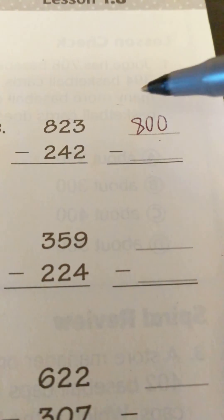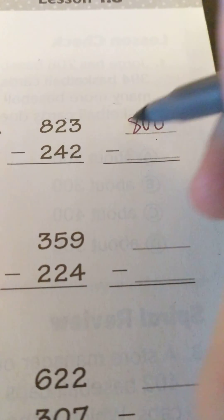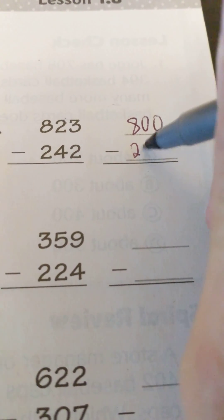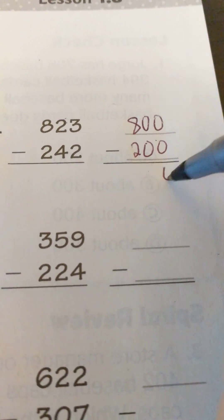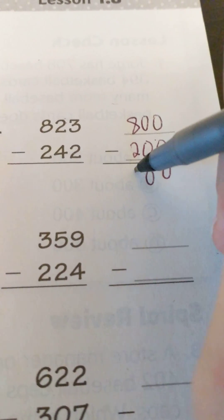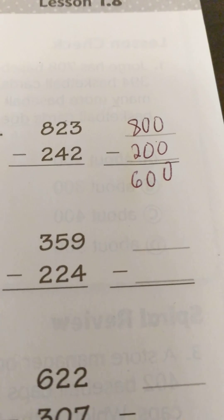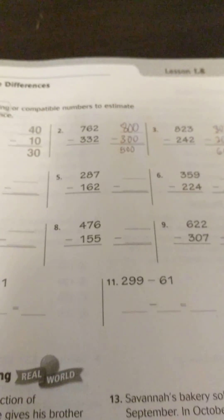And then if I look at my tens here, again, it's less than five. So when I round it to the nearest hundred, it will be 200. So I have 800 minus 200. 8 minus 2 is 6, so that equals 600. And that is how we estimate differences.